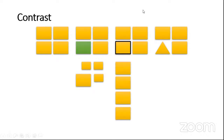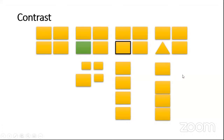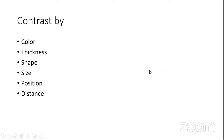Then the orientation from top to bottom, and the last one is distance. You can see that three boxes are at the same distance, whereas the fourth one is at a different space or distance. So in summary, for Contrast: color, thickness, shape, size, position, and distance — these are the techniques.